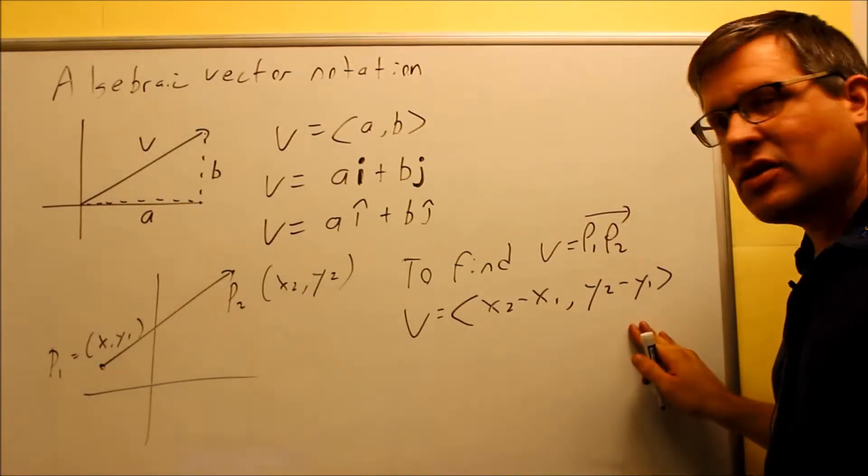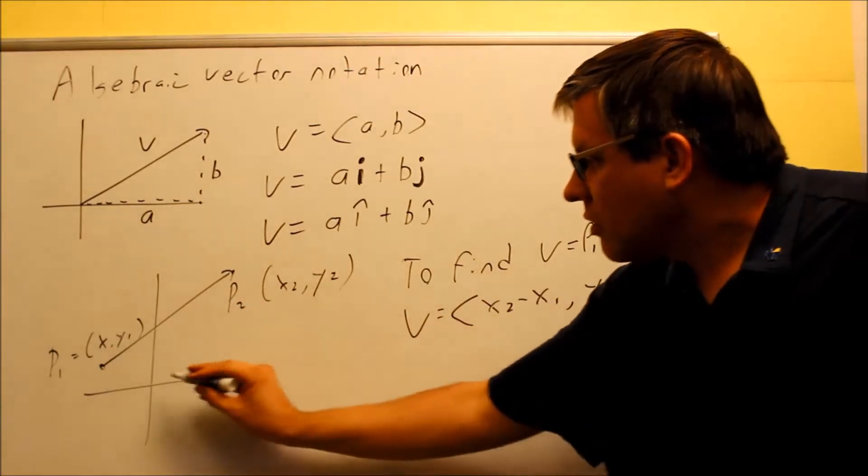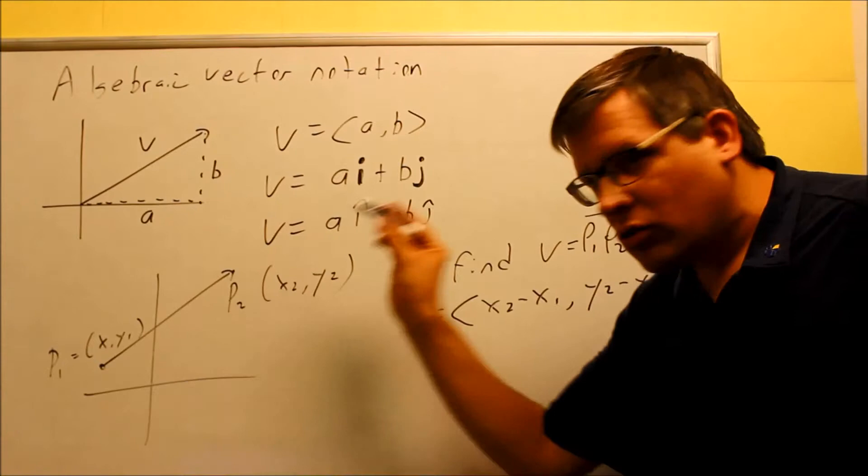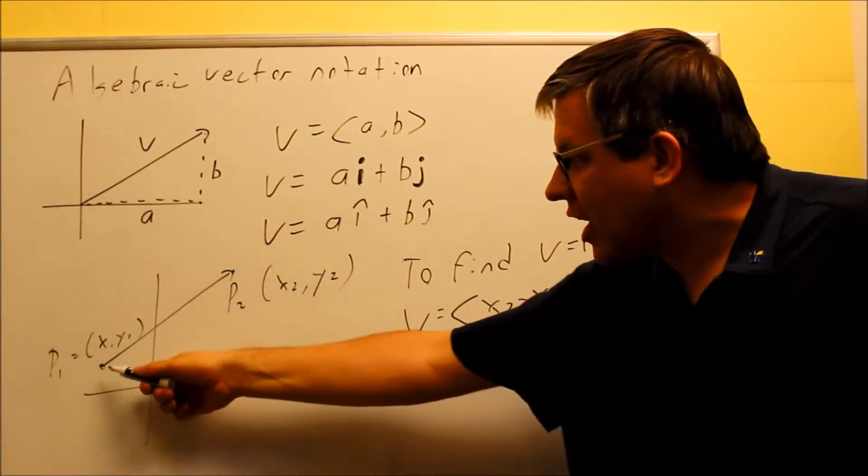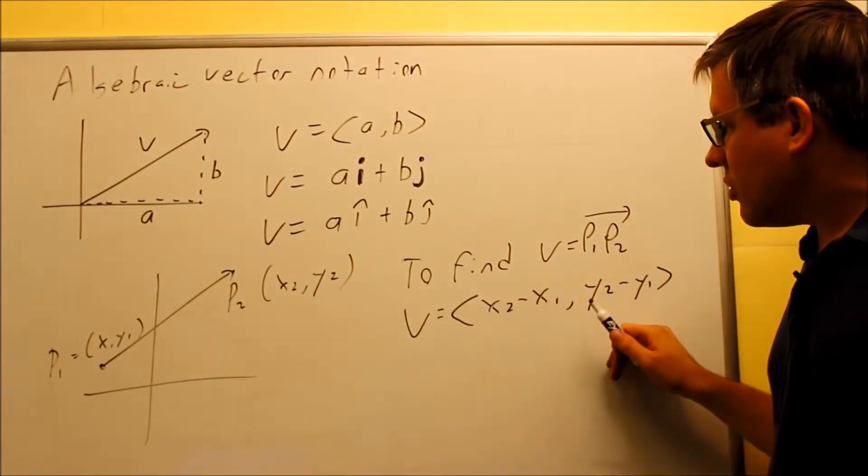But basically what this allows you to do, it allows you to take a vector normally drawn here, and you rewrite it at the origin. It's going to have exactly the same slope, the same angle. It's just that now our starting point's not going to be here. It's now going to be at 0,0.